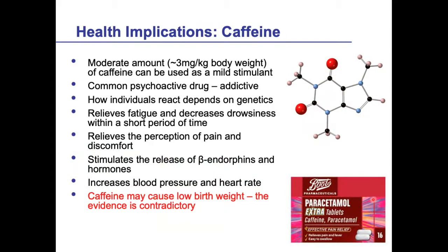In these lectures, as well as looking at the growth, manufacture, and history of food, we also look at some of the health implications. One of the things you get with tea, of course, is caffeine. This is a model of the caffeine molecule — what it really looks like: carbon atoms in black, oxygen in red, nitrogen in blue, and hydrogen in white. It's a common psychoactive drug, and how you react to it depends on your genetics. Many people who drink a lot of caffeine — coffee drinkers especially — get a bit shaky in the morning before they've had their first cup.